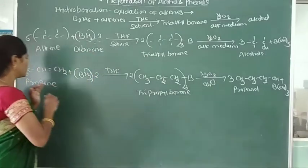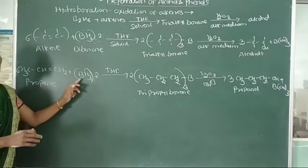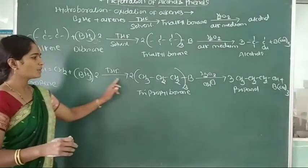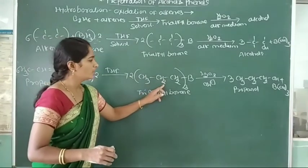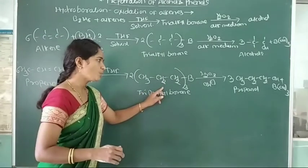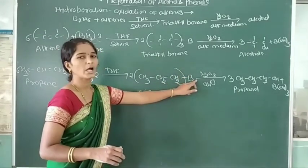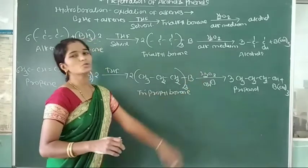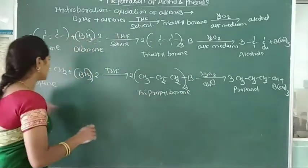Here this propene reacts with diborane to give formation of tri-propyl borane. And this tri-propyl borane is oxidized with hydrogen peroxide to give propan-1-ol. We see another example.